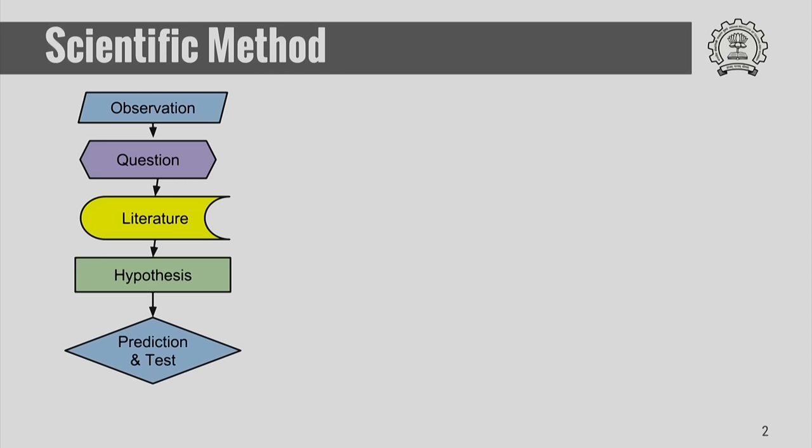In a separate lecture, we have shown what the scientific method is. To recapitulate, a scientific method is essentially a sequence of steps followed in a cycle. You begin with an observation from which you draw a question, go to the literature to find a way to solve the problem, come up with a hypothesis, and then show it using an experiment or theory which forms the prediction and test.